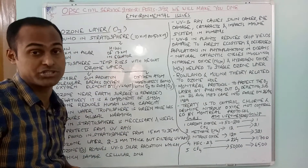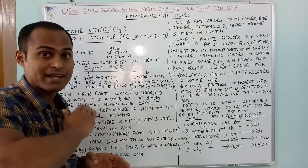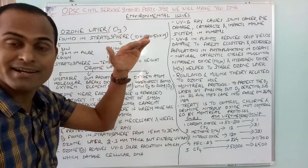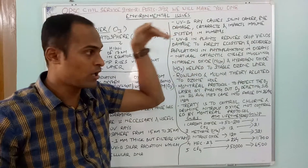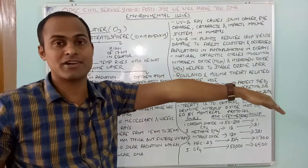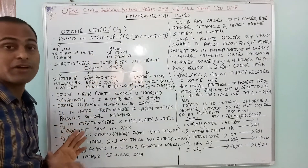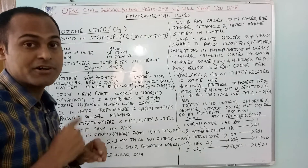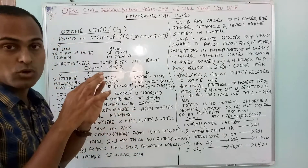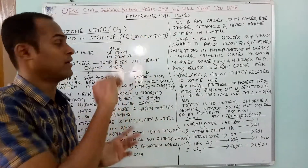The stratosphere is as low as 7 kilometer in the polar region and 17 kilometer in the equatorial region. As we move from equator towards the pole, the stratosphere layer slowly comes down from 17 km at the equator to 7 km in the polar region. Also very important: in the stratosphere, temperature rises with height — this is inverse to the troposphere, where temperature falls as you go up.